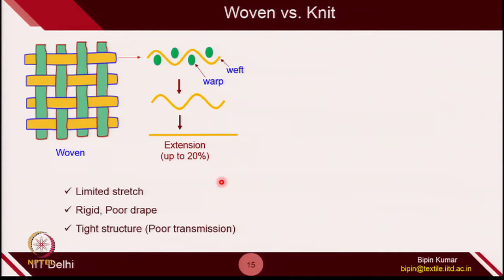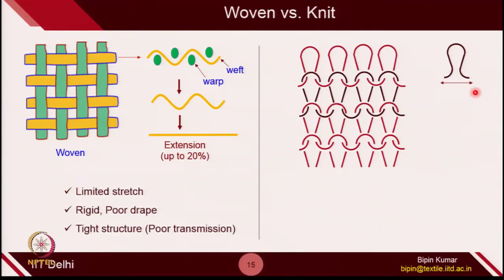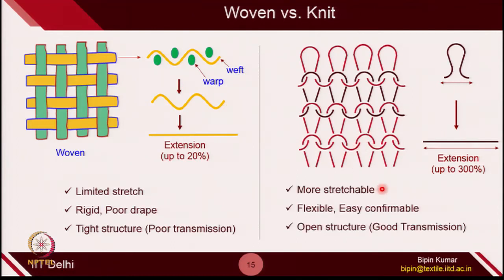Woven is extremely rigid, and because of its rigidness it cannot fit to any 3-dimensional shape or structure. It is extremely tight, so it has very poor air and moisture transmission compared to a knit structure. While knitted, as we have seen, is made up of loops which are very easy to deform — when you try to give any force, it will extend very easily because the loops try to open up. Because of that, it is more stretchable, more flexible, can conform to 3-D structures very easily, and is very open — that is why it gives very good transmission properties. These 2 structures are fundamentally different in many properties.